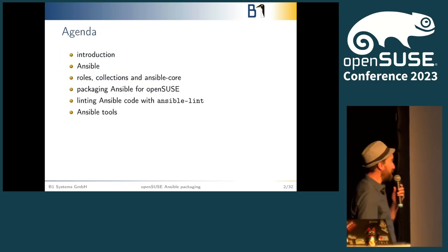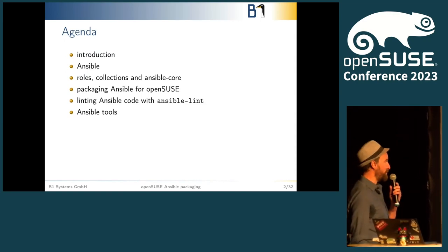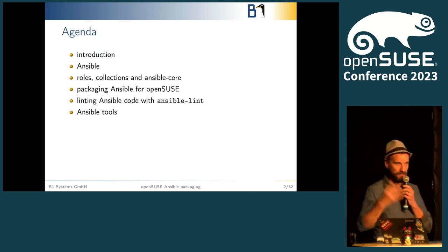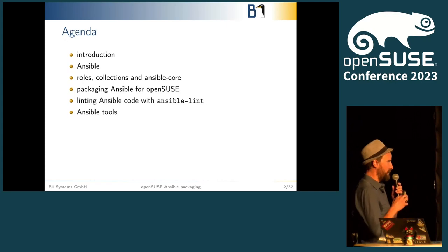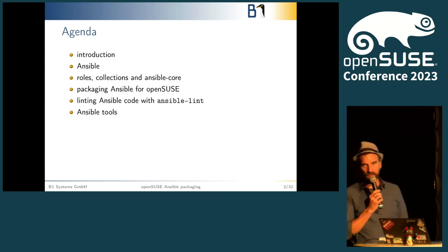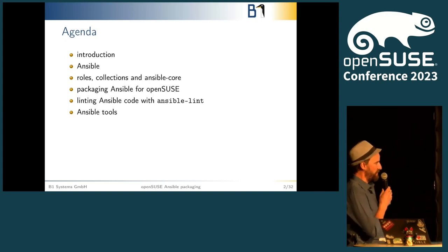I'll give a short introduction of myself and where I come from, what I do. I'll be talking about Ansible itself — what Ansible is, what Ansible does, how to use it, and what belongs to Ansible. We'll touch on roles, collections, and Ansible core, and then have a look at the Ansible packaging for OpenSUSE. We'll talk about Ansible Lint, which does linting for Ansible — that's where the name comes from — and other Ansible tools.